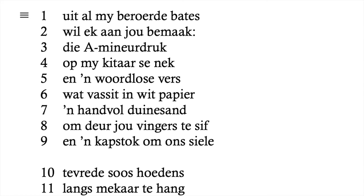It's always important, especially as seniors doing Afrikaans First Additional Language, to actually read the poem yourself to identify the alliterasie (alliteration), assonansie (assonance), enjambement, and rhyme scheme on your own. To identify most of those things you have to read it out loud — you can't just assume, because vowel sounds in Afrikaans sometimes pronounce differently.